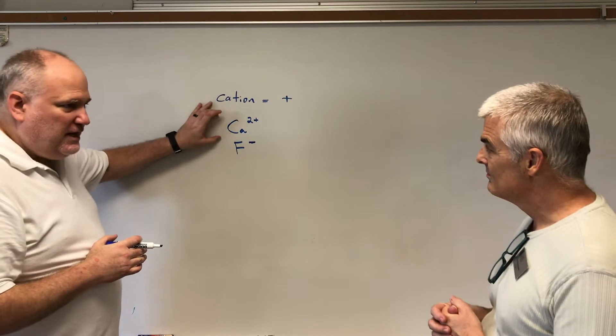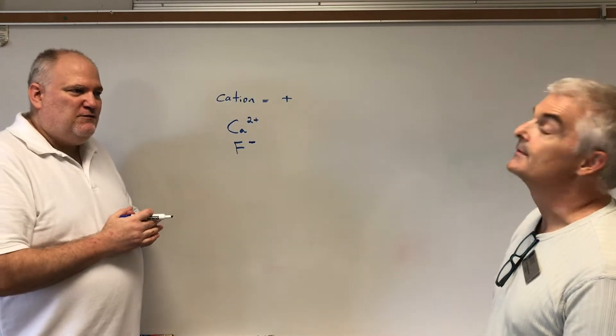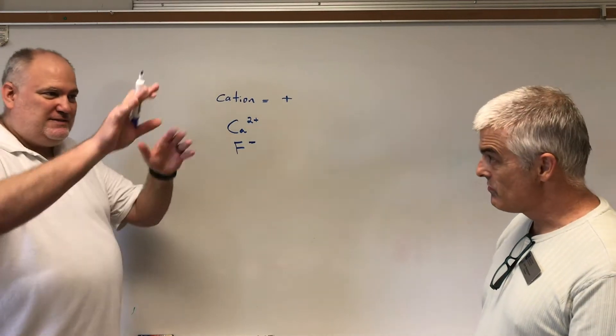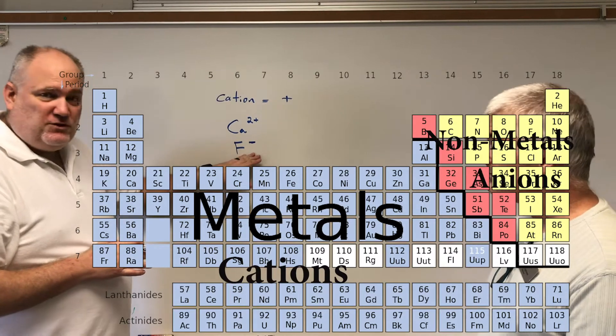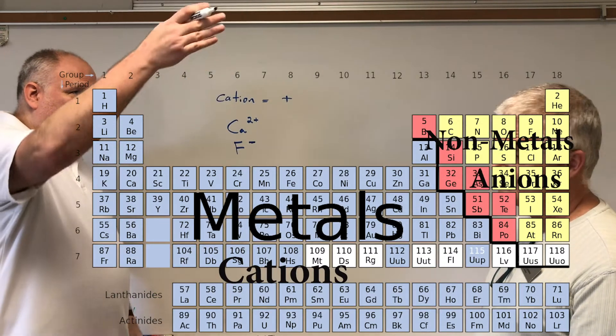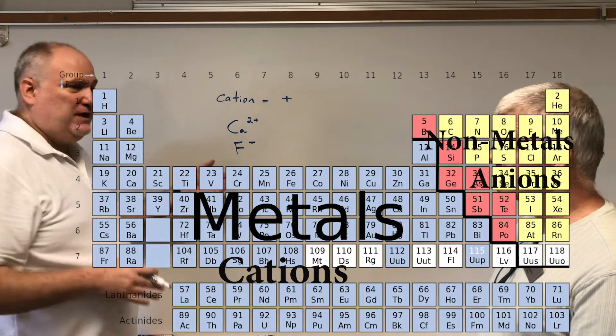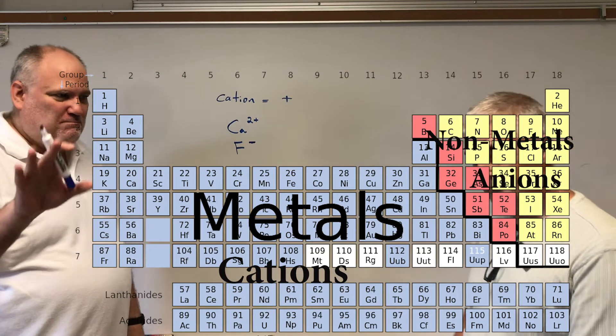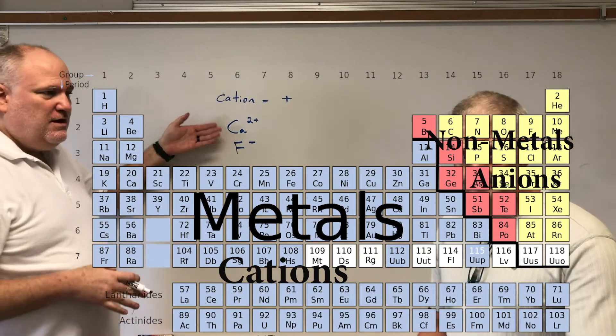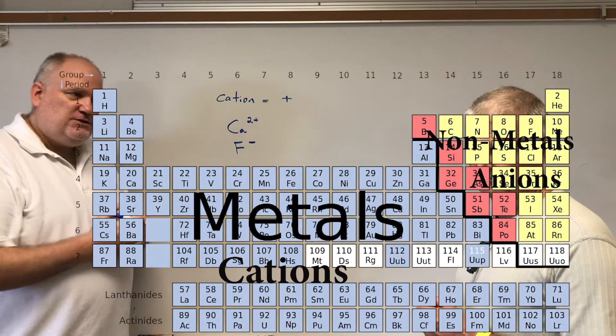Cations, those are your metals. Anions, those are your non-metals on the right hand side of the table. Anything on the staircase to that side are anions which are negatively charged. Everything on the left hand side is positive. Perfect.